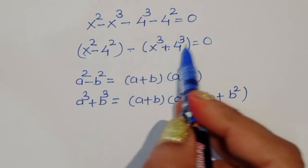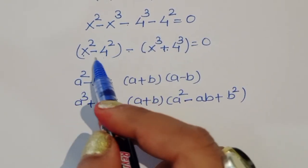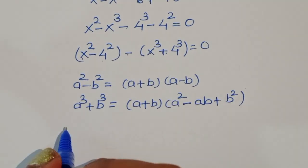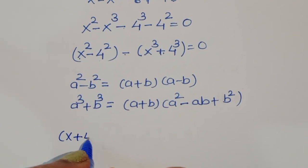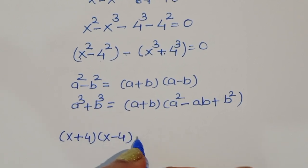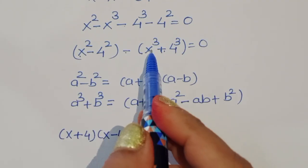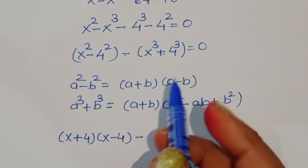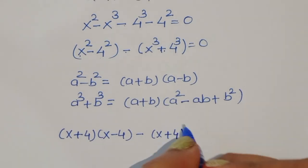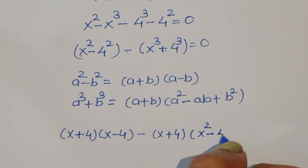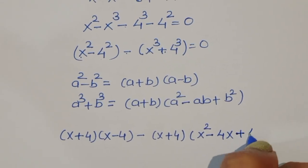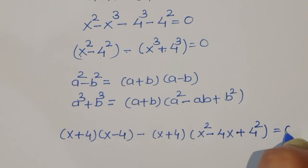Applying the formulas: x squared minus 4 squared gives (x plus 4)(x minus 4). Then for x cubed plus 4 cubed, we get (x plus 4)(x squared minus 4x plus 16), where the middle term is ab equals 4x and b squared equals 4 squared equals 16. So the full expression is (x plus 4)(x minus 4) minus (x plus 4)(x squared minus 4x plus 16) equals 0.